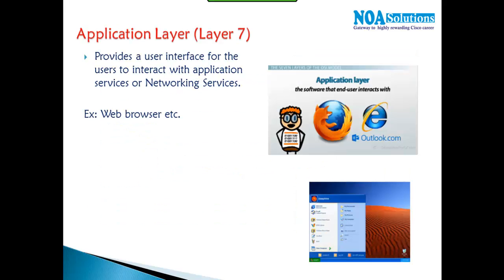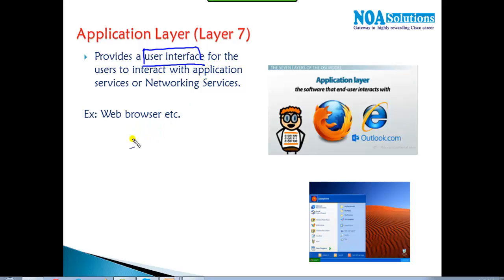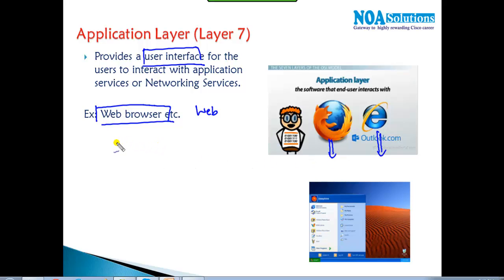The Application layer's major job is to provide the user interface. For example, if you want to access the internet you need a browser — Mozilla or any other browser. If you're sending and receiving mails, you use mail clients like Outlook. Behind these applications there are protocols: HTTP is the backend protocol that allows you to access web pages, providing an interface to connect to that particular service.